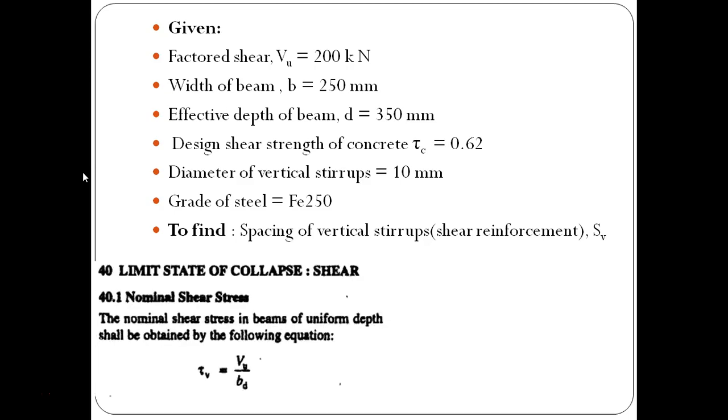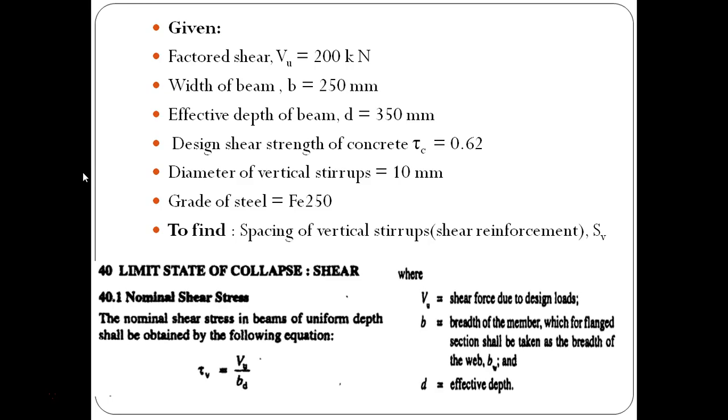So, we know that from clause number 40 of IS 456-2000 that limit state of collapse, clause number 40.1 which is regarding nominal shear stress, the nominal shear stress in beam of uniform depth shall be obtained by the following equation that is tau V equals to VU divided by BD. Now, VU that is the shear force due to design load, B equals the breadth of the member which for flange section shall be taken as breadth of the web that is BW, and small d that is effective depth.